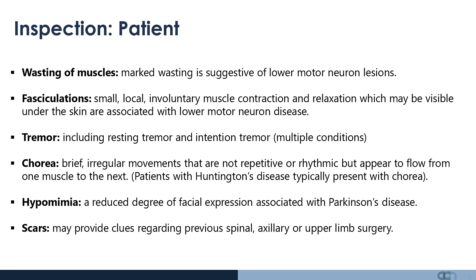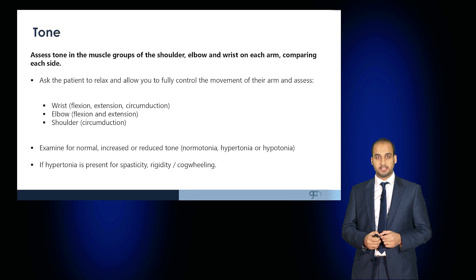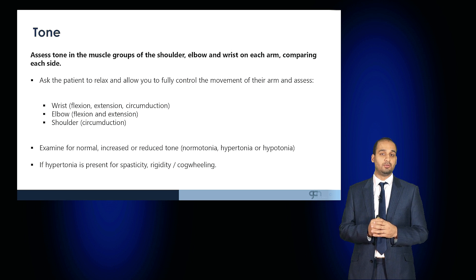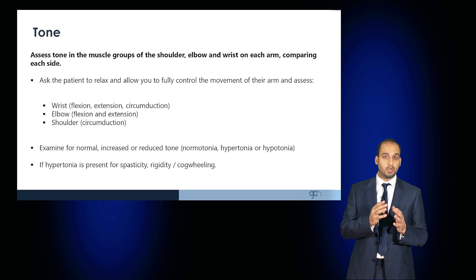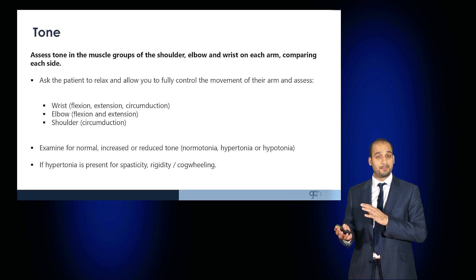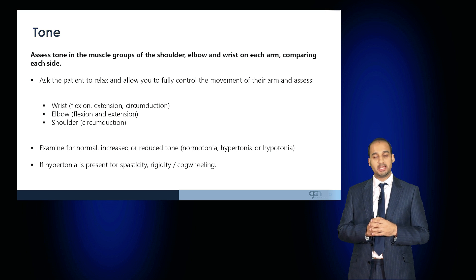Also look for any scars, which may indicate surgery — either spinal surgery or upper or lower limb surgery. Assessing tone should be done by assessing various muscle groups of the shoulder, elbow, wrist, and arm, comparing side to side.